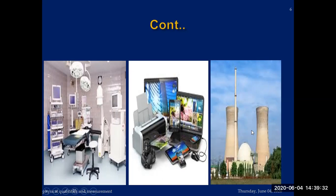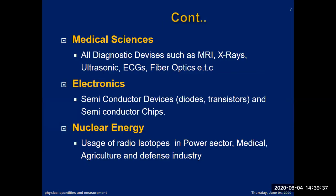Other types of research laboratories — life science, space, and other types of laboratories — physics is involved. In medical science, all diagnostic devices such as MRI, X-ray, ultrasonics, ECGs, EEGs, fiber optics, and all types of electronic machines used have a connection with physics.